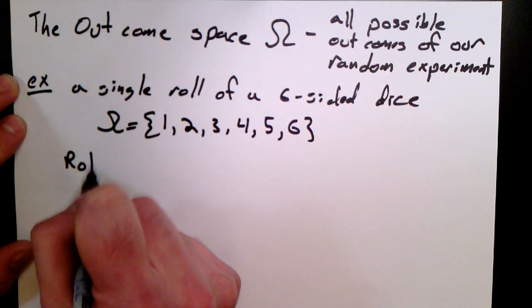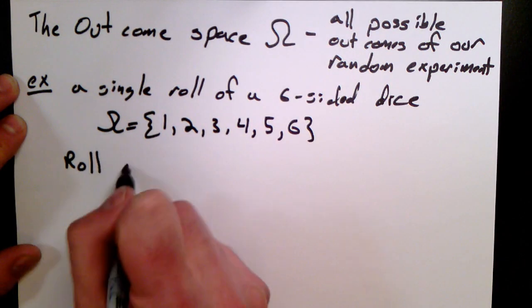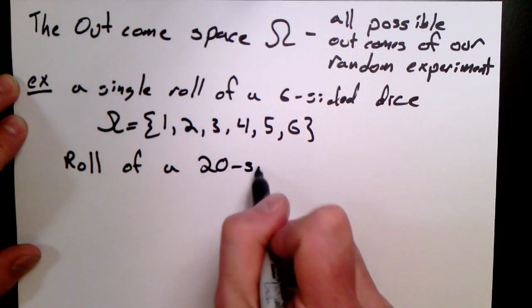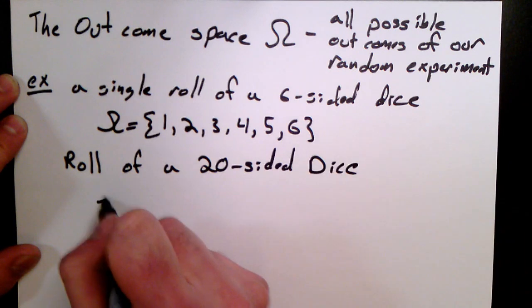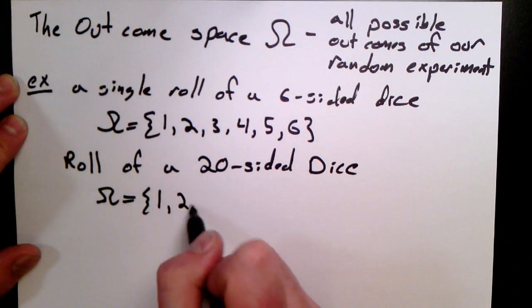Now, if the die is a 20-sided die, the answer is the outcome space is just the set of all integers one, two, three, four, five, six, all the way up to 20.